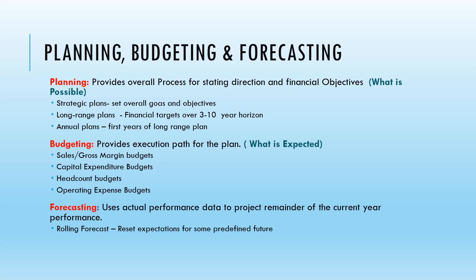Planning includes long-range plans — over three to ten years — as well as annual plans. The key activities are: creating strategic plans, developing three-to-ten-year plans, and reviewing annual plans year on year. This is what we can do in planning — focusing on what is possible.